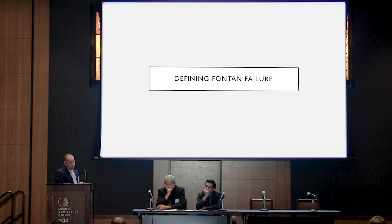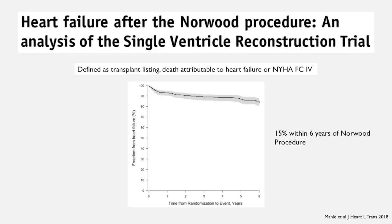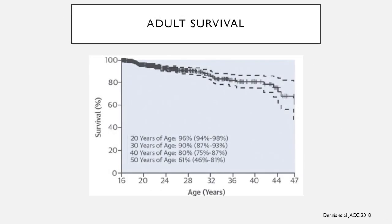Defining Fontan failure: it was described in the Single Ventricle Reconstruction Trial as a composite of transplant listing, death attributable to heart failure, or functional class 4, within 15 years. Within six years of the Norwood procedure, 15% of patients would have achieved that endpoint. In adult survival figures from Australia, about 20% have died by the time they're 32 years of age. Our population is better than that — I don't know if that means we're better than Australia, but it's a different population.